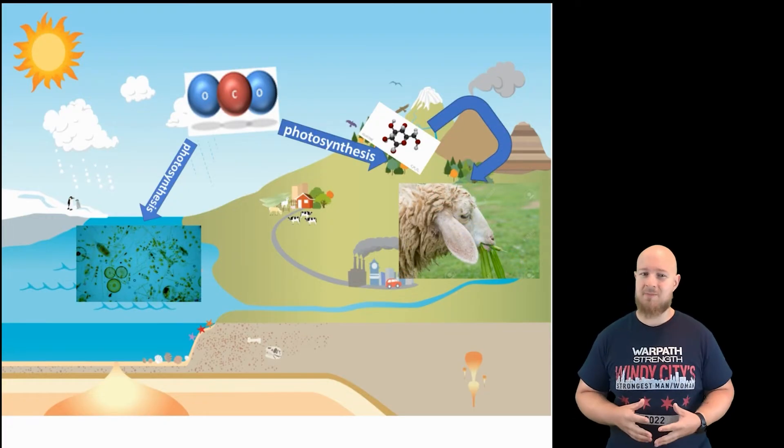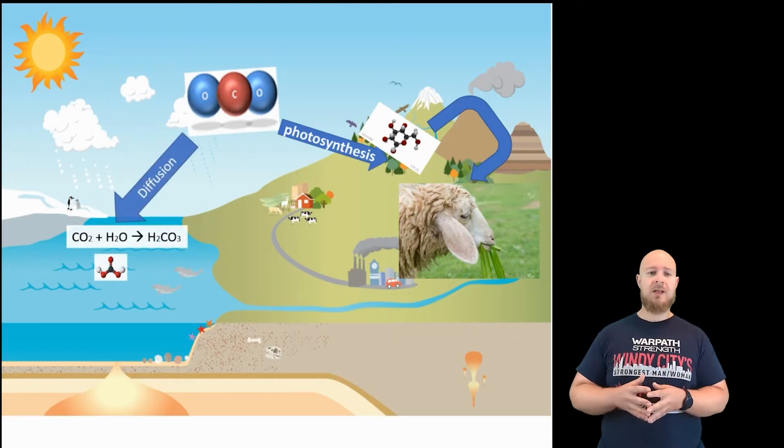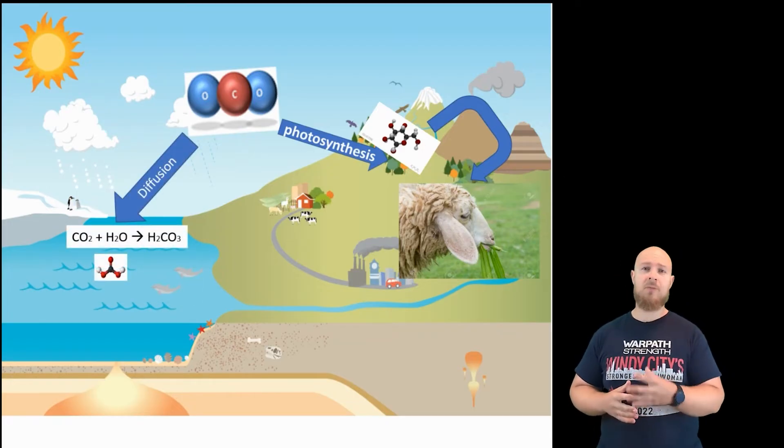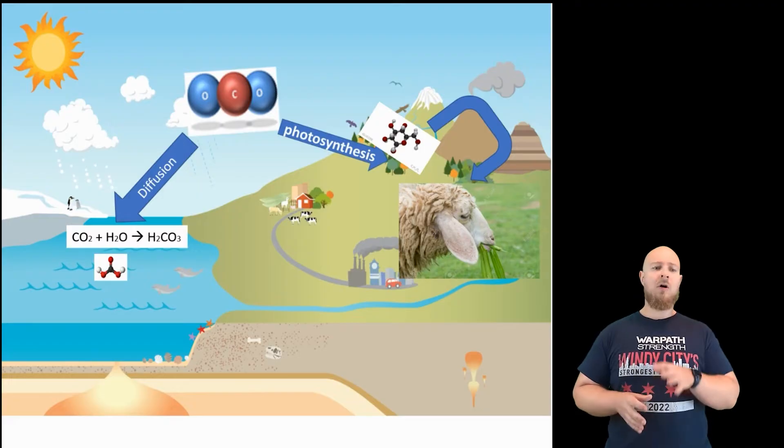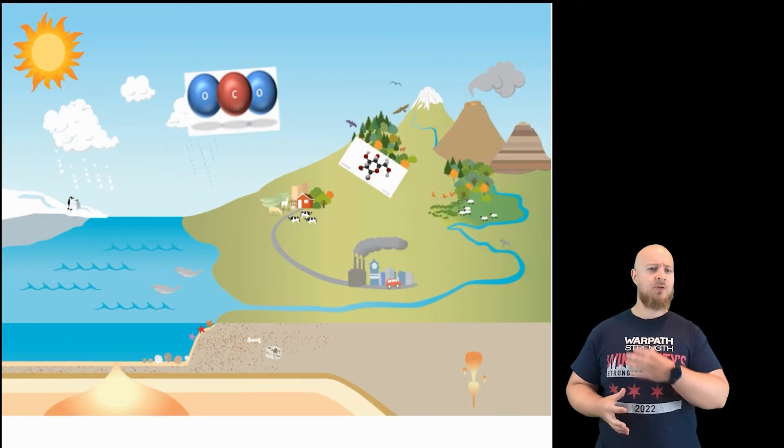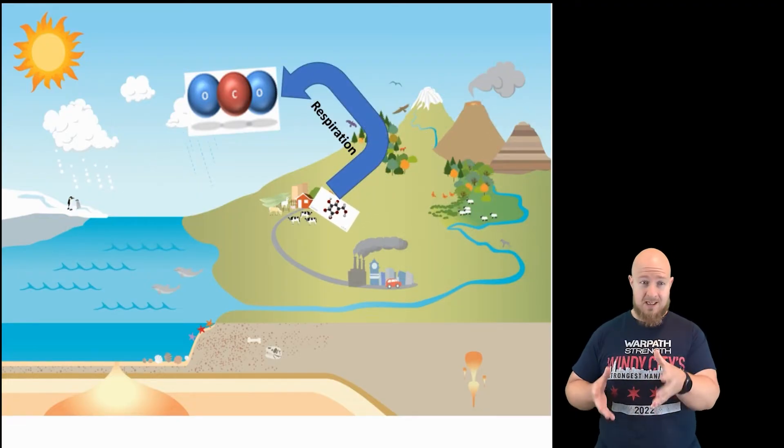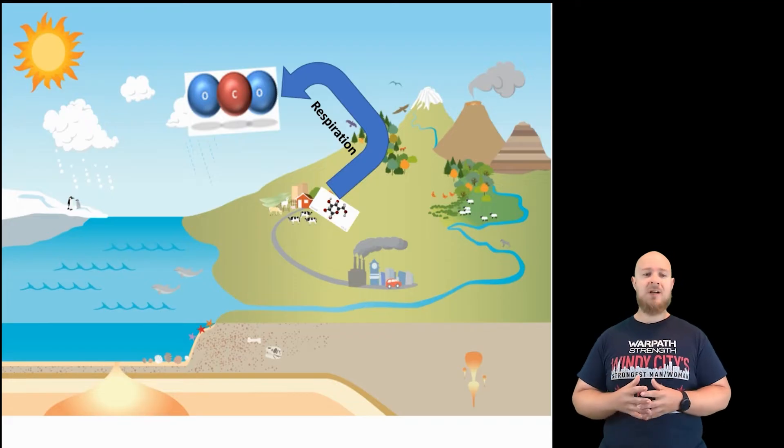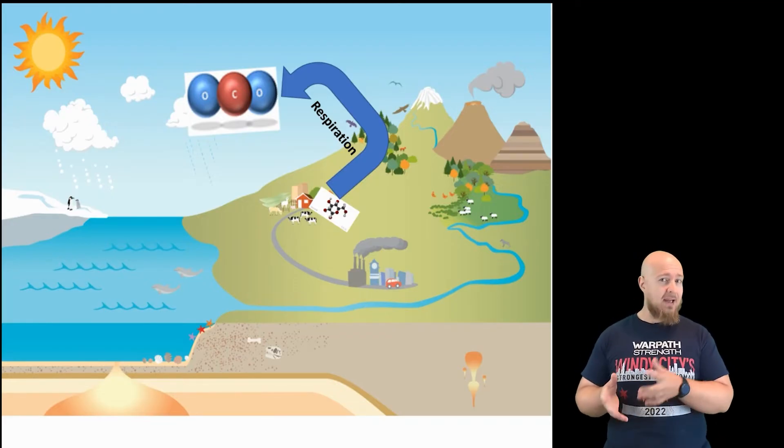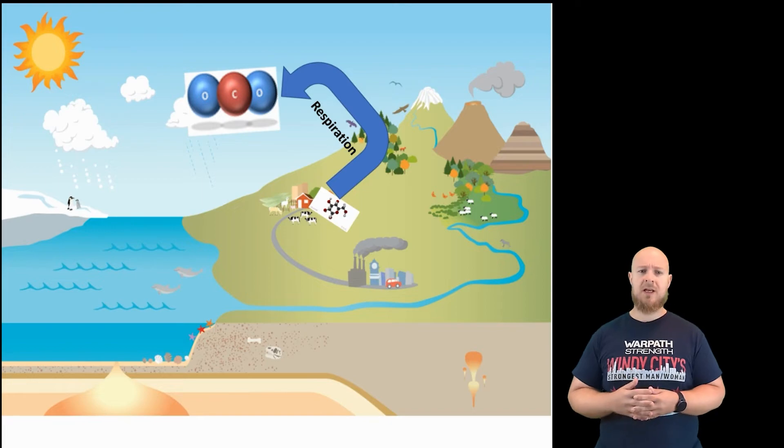The glucose can then be further moved through the biosphere through food webs as one organism consumes another. Carbon dioxide can also diffuse into bodies of water, where it undergoes a chemical reaction with the water, forming carbonic acid. All living things use energy and undergo respiration, and yes, even plants. Respiration is how the carbon in glucose ends up back in the atmosphere as CO2 again.